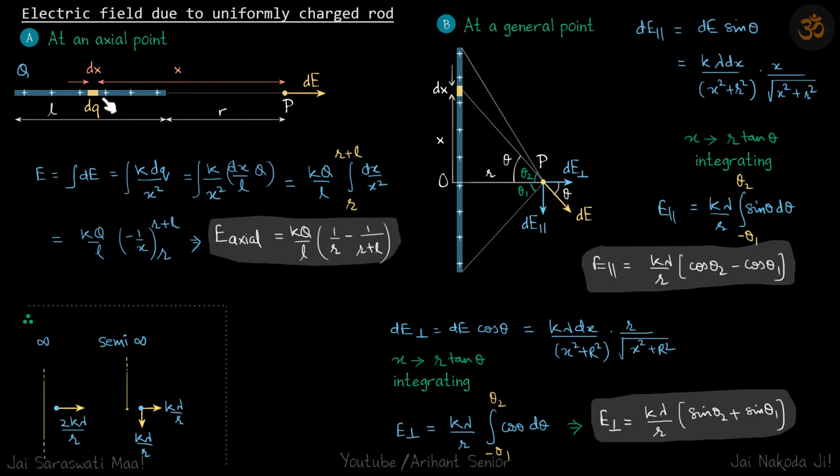So we'll take a small element dq at a distance x from P. So we'll calculate the electric field due to this element. So here dq, that should be by unitary method dx divided by L into Q. So dq will be dx divided by L into Q and the field will be k dq by x square.